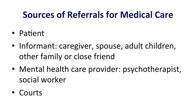There are many sources that referrals of individuals seeking evaluation for dementia come from. These may come from the patient who initiates the request themselves, or from an informant such as a caregiver, spouse, adult children, or other family members or a close friend. Sometimes referrals come from mental health care providers such as a psychotherapist or social worker, and sometimes the courts become involved due to legal concerns.